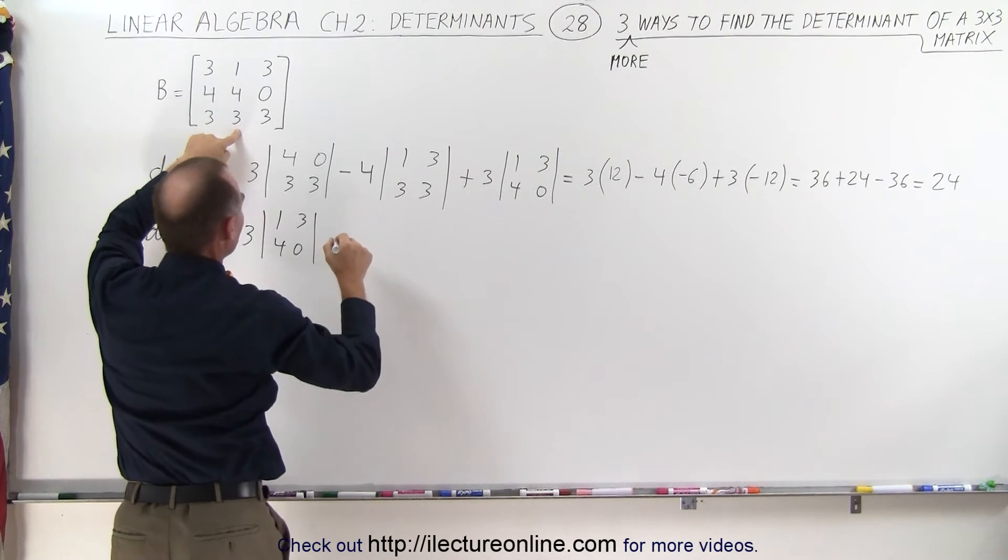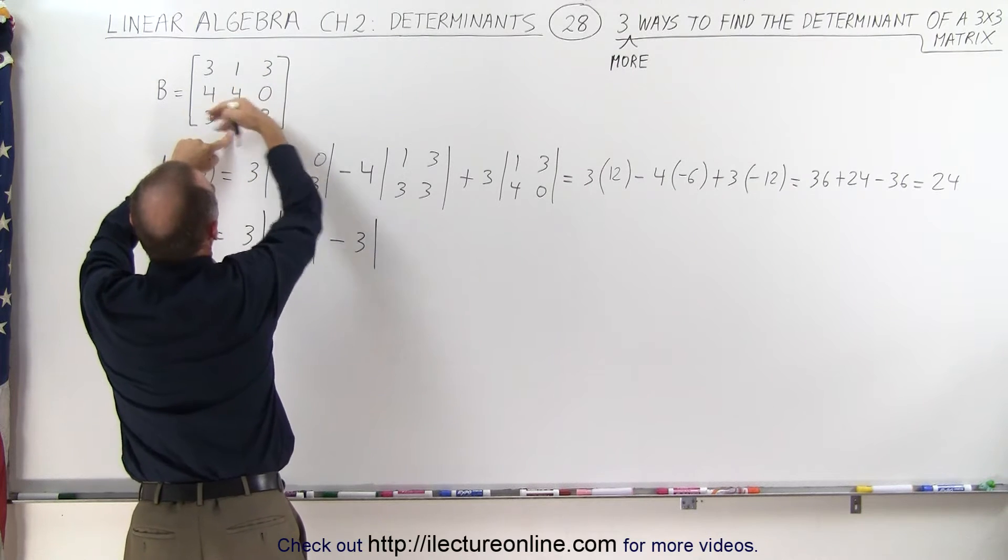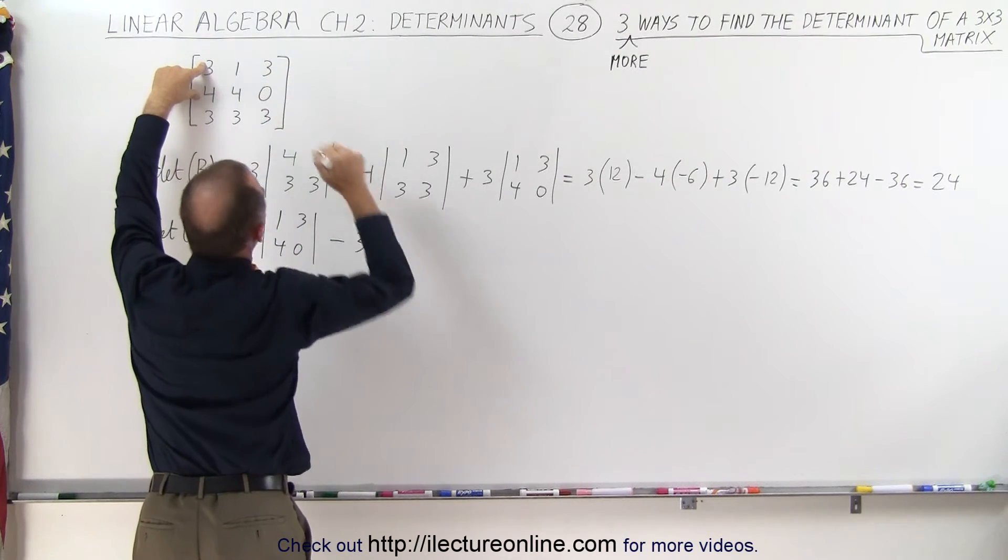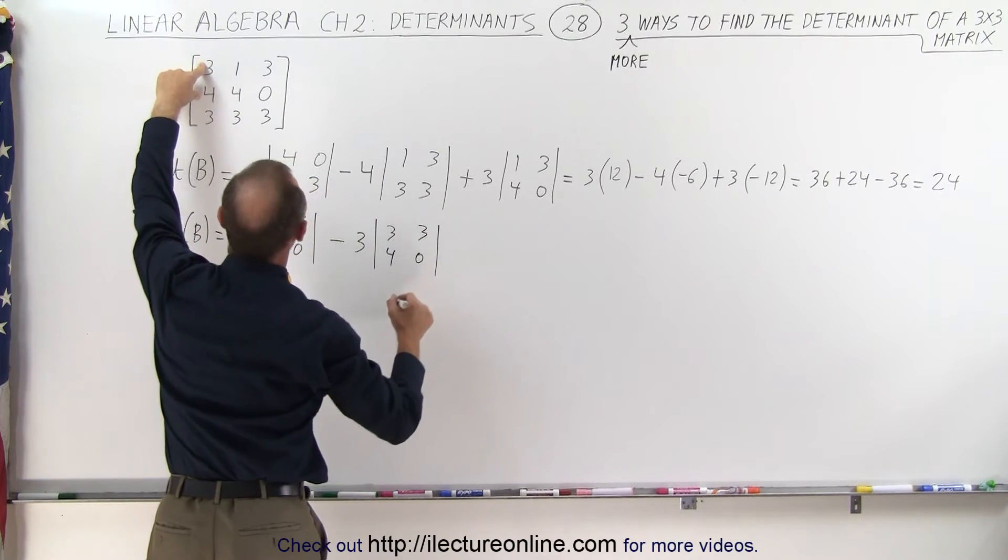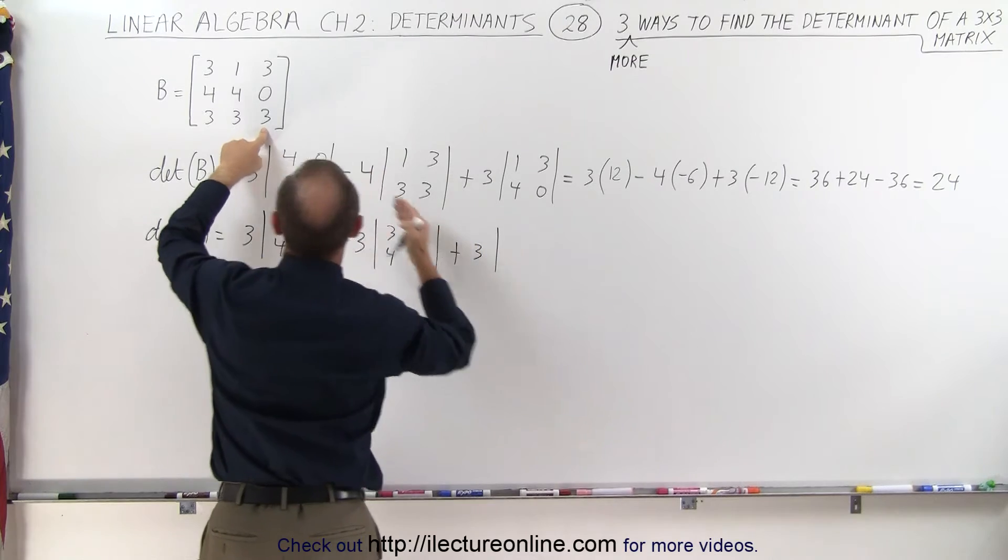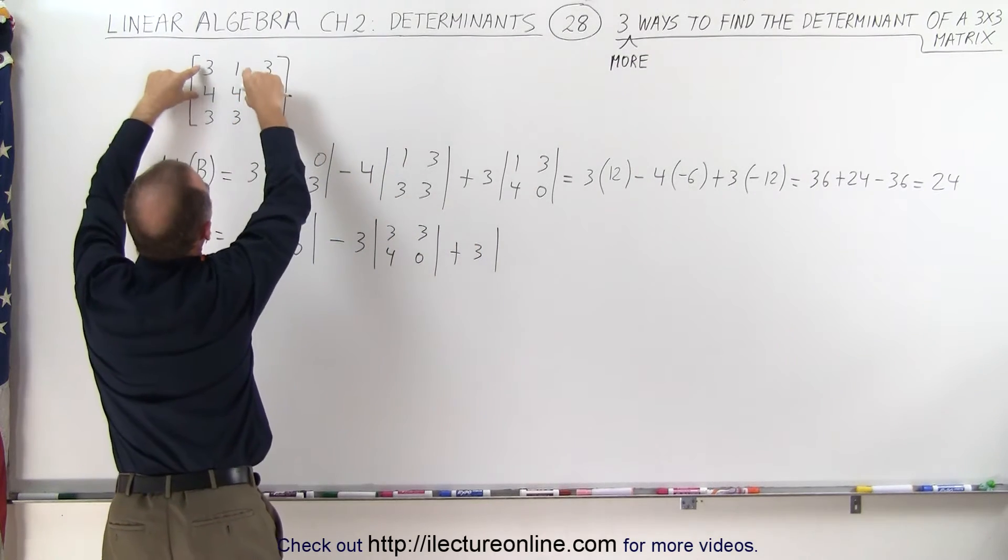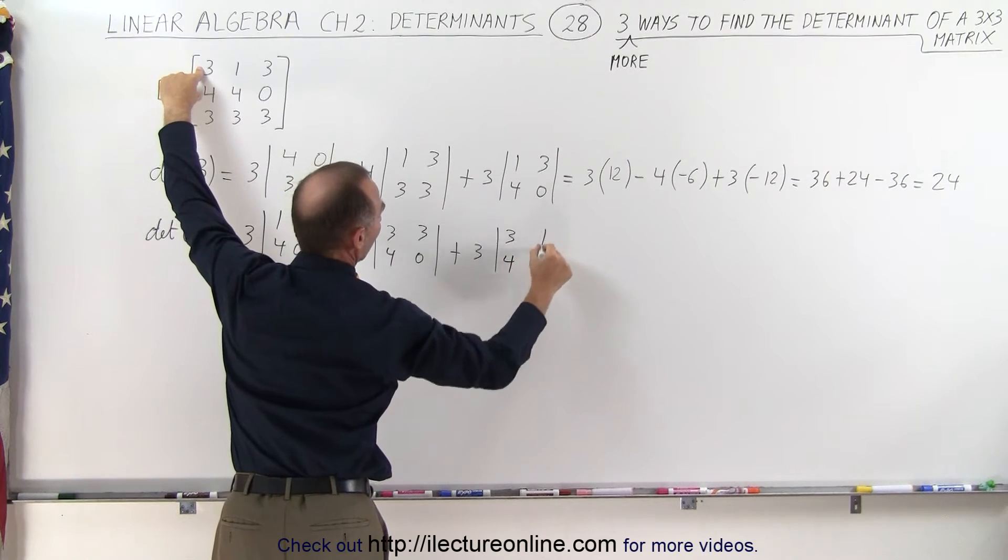Minus, now we take the second element here, which is also 3 times, we cross out this column, this row, we end up with those four elements: 3, 4, 3, 0. And then plus the third element, 3 times, when we cross out this column, this row, we end up with those four elements: 3, 4, 1, and 4.